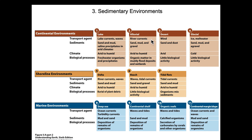In alluvial environments, the main transport mechanisms are gravity and flowing water. Types of material generated include sand, mud, and gravel, found in arid to humid environments — the example used was Death Valley, an arid environment. Biological processes may include organic matter in muddy flood deposits and wetlands, but very little or no organic matter in dry desert environments.